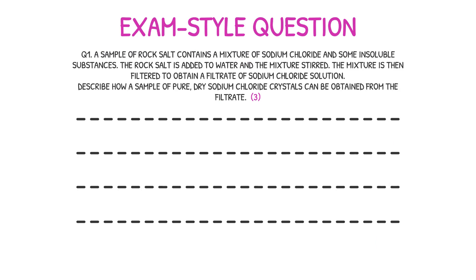Here's an example of an exam-style question that you may be asked on this topic. A sample of rock salt contains a mixture of sodium chloride and some insoluble substances. This first line is already very important — sodium chloride is the scientific name for table salt, and at GCSE level you are expected to know this. Table salt is soluble, so this first sentence is telling you that rock salt contains a mixture of soluble and insoluble substances. When the rock salt is added to water, the sodium chloride will dissolve into the water, forming a sodium chloride solution. However, your insoluble substances will not dissolve.